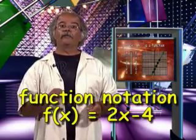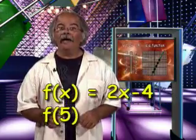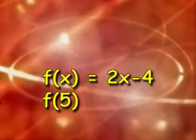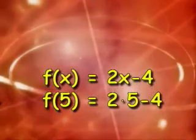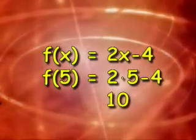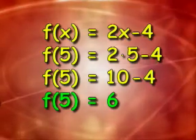So in the case of f of x equals 2x minus 4, if we want to find the member of the range that corresponds to 5 in the domain, we want to find f of 5, and we find it by substituting 5 in for x and simplifying. 2 times 5 is 10, minus 4 is 6, so f of 5 equals 6.